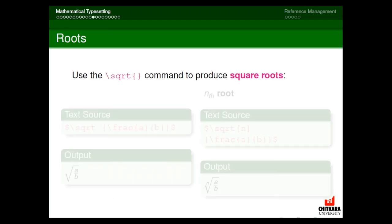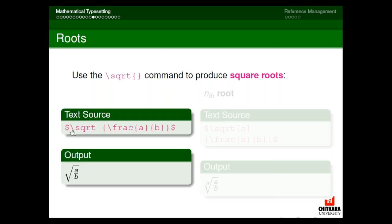Now, how to write square roots. The command is backslash sqrt and whatever is to be written within the square root is enclosed in curly braces. For example, to write the square root of a/b (as a horizontal fraction): write dollar, backslash sqrt, then in curly braces write backslash frac {a}{b}. The output shows the square root of a upon b.